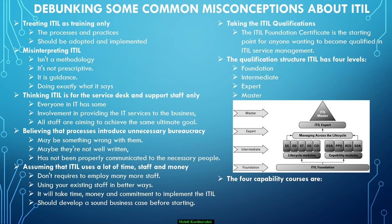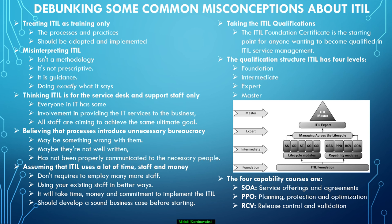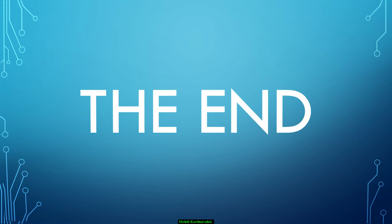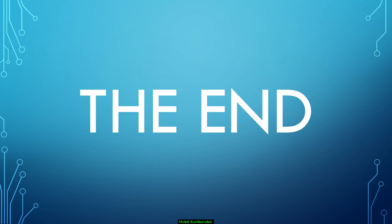The four capability courses provide a practical view of ITIL and cover the skills and knowledge needed to execute process activities on a daily basis. The four capability courses are: SOA (Service Offerings and Agreements), PPO (Planning, Protection and Optimization), RCV (Release, Control and Validation), and OSA (Operational Support and Analysis). Thank you for watching this video. I hope you have gained an understanding of the ITIL basic concepts.